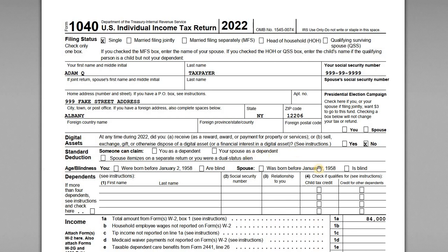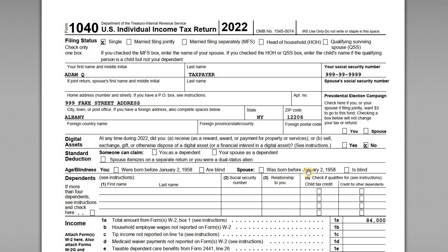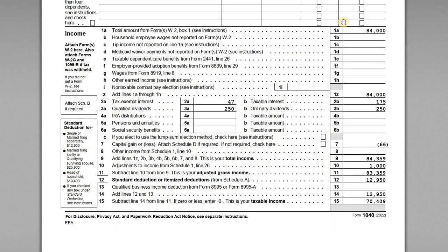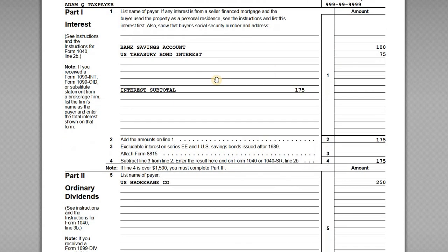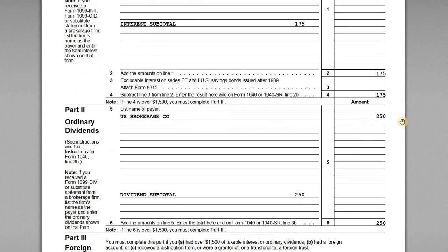Let's look at the federal return first, since New York uses federal income as a starting point before making adjustments. On Adam's 1040 we have total wages per his W-2, taxable interest income of $175, and total ordinary dividends of $250, all of which is qualified. His tax-exempt municipal bond interest is noted separately. On Schedule B we can see the $100 in savings account interest, $75 in US Treasury interest, and the $250 in ordinary dividends.